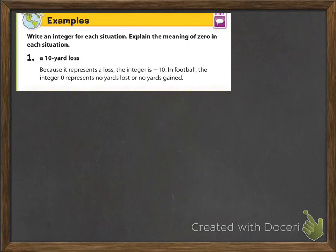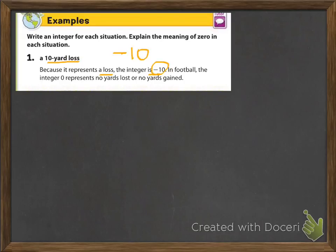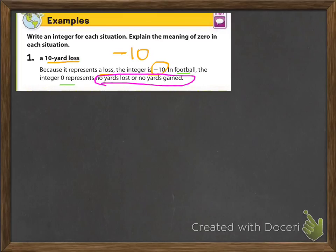Let's look at Example 1. It says write an integer for each situation and explain the meaning of 0 in each situation. A 10-yard loss — the sport we're probably referring to is football, and a 10-yard loss would be a negative integer. Because it's a loss, the integer is negative 10. Then in football, the integer 0 represents no yards lost or gained. Notice it asks you to explain the meaning of 0. You need three pieces: the loss, the negative 10, and the explanation.